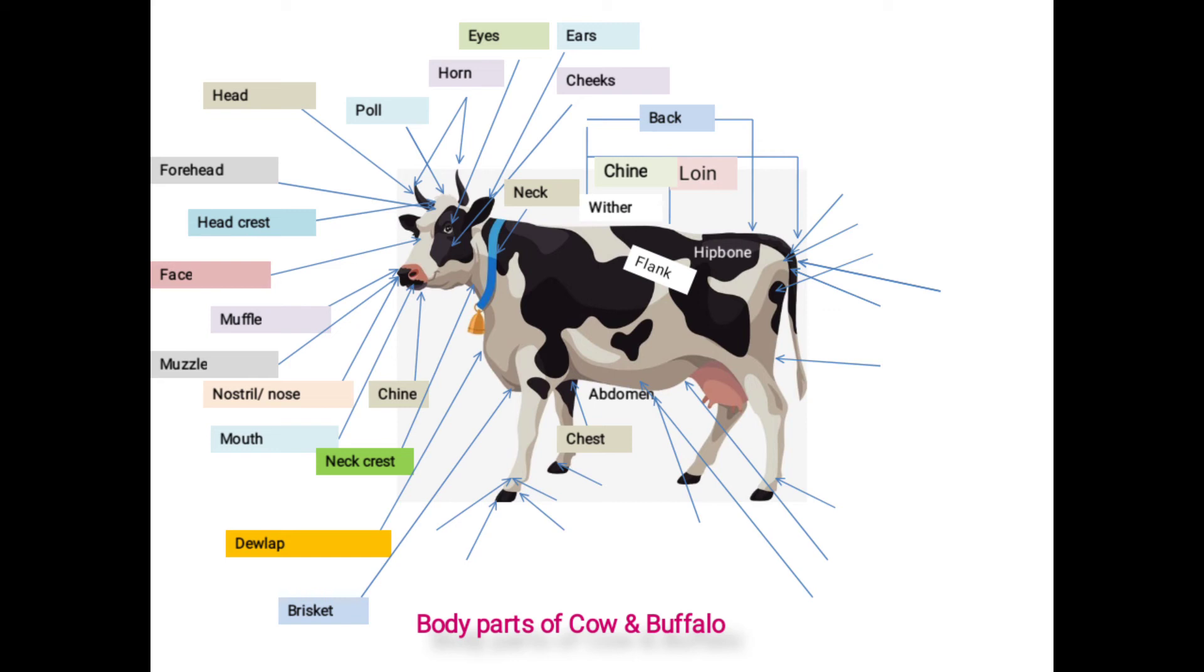And it consists of navel flap and navel point. A fold of skin hanging between the chest and the udder or scrotum is called as navel flap.